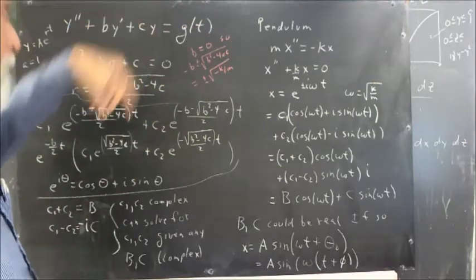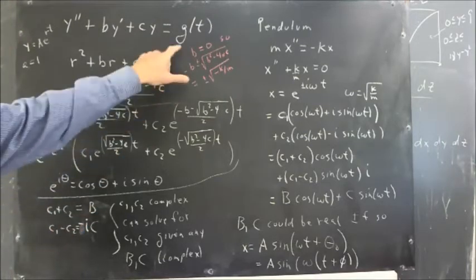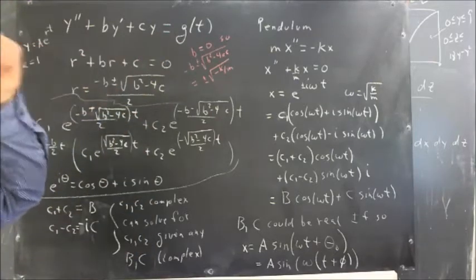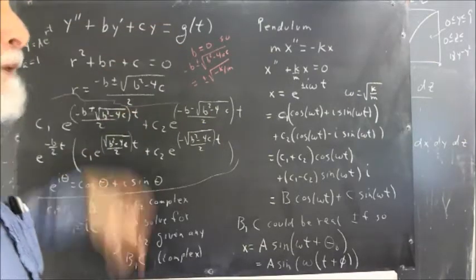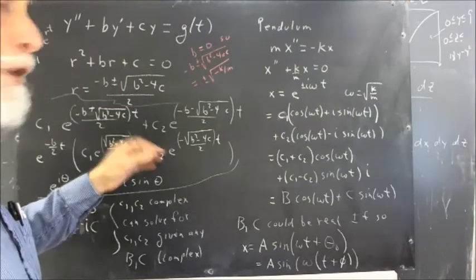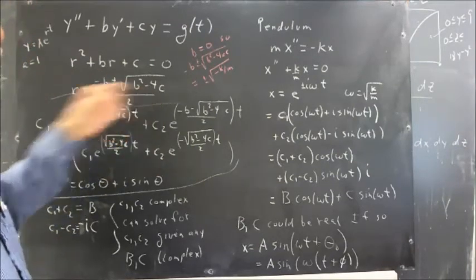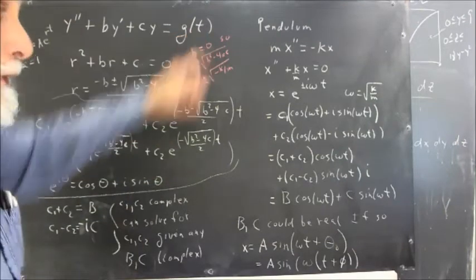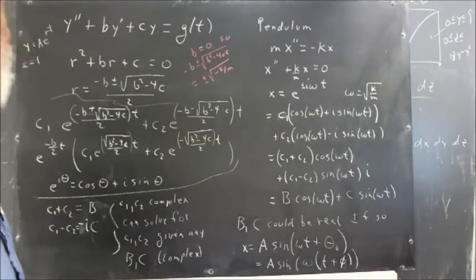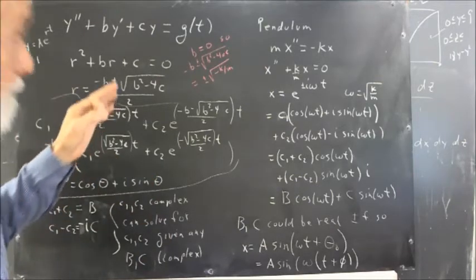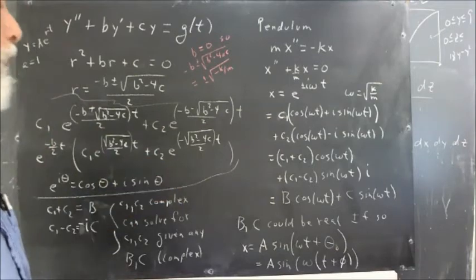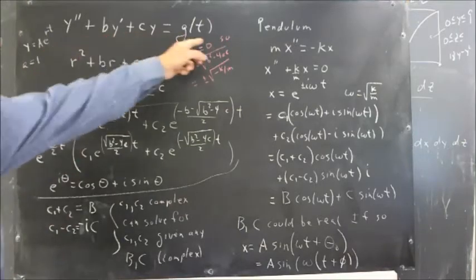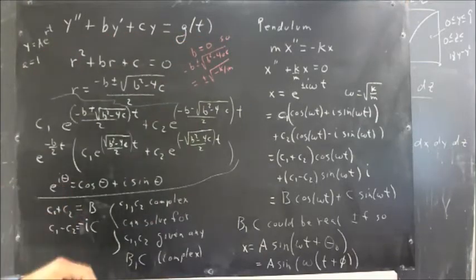Now, we have two methods of dealing with the function g of t over here. We get our particular solution, again, something I assume you're familiar with, by either variation of parameters or undetermined coefficients. As it turns out, in many of the physics applications, probably in most, g of t is going to be some sort of a sine or a cosine function. And we're not going to need to resort to variation of parameters. We can just deal with this by undetermined coefficients.